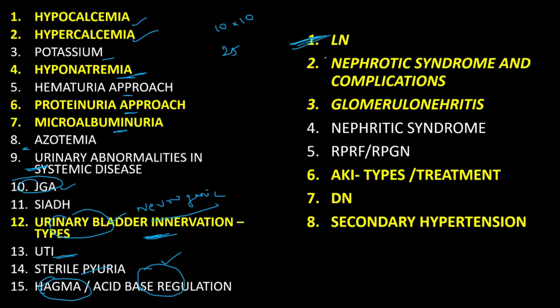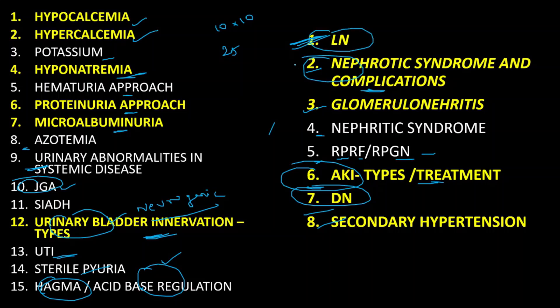With respect to glomerular and AKI related topics, the most important ones are lupus nephritis, nephrotic syndrome — including various etiology, pathophysiology, and complications — and glomerulonephritis with various types, pathophysiology, and management. Nephritic syndrome, rapidly progressive glomerulonephritis (RPGN) — etiology, investigations, and management — and acute kidney injury definition, types, investigation, and management are key. Diabetic nephropathy and secondary hypertension are also crucial. Diabetic nephropathy, lupus nephritis, and nephrotic syndrome have been asked multiple times in almost all university question papers, appearing in either the second or third paper.